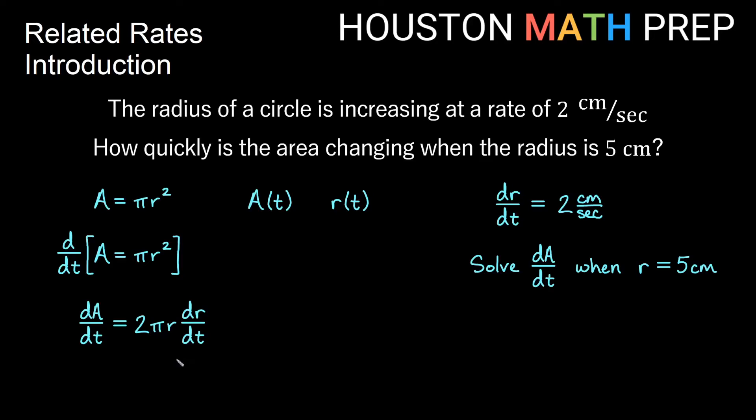Now if you look at this formula, you'll see I have dA/dt equals, I have a place for a radius, and I have a place for dr/dt. Now I know both of these because we have both of these over here. I have that dr/dt is 2 centimeters per second, and I have that the radius is 5 centimeters. That's when I want to know dA/dt.